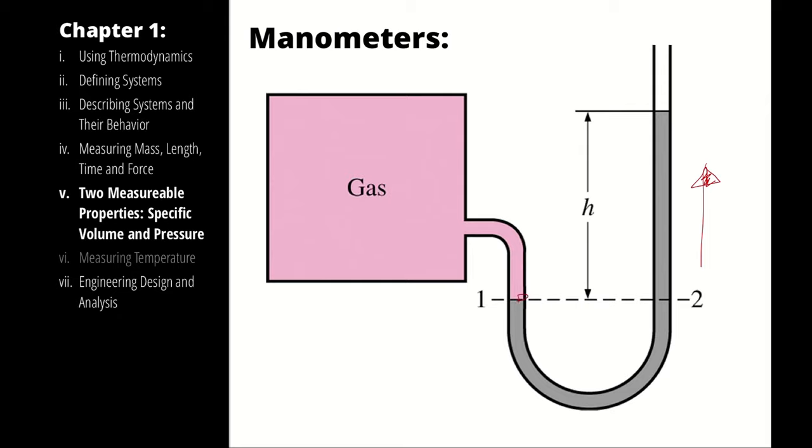Because we know P1 and P2 are going to be equal because they're at the same height, that means that the pressure of the gas is going to be the same as what you would get if you use the height difference between this point and this point to figure out the pressure increase and added that to atmospheric pressure.